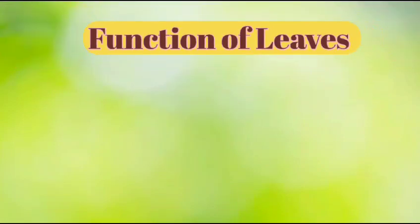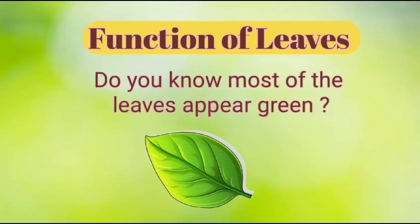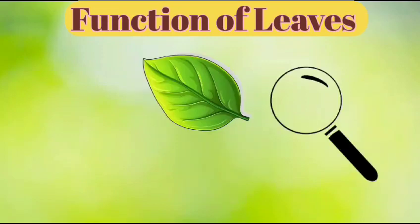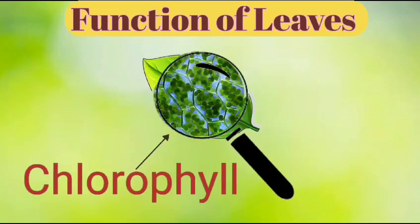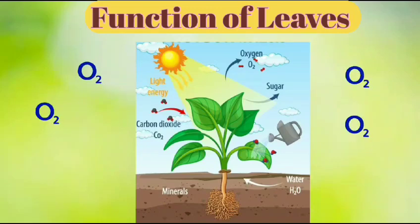Function of Leaves. Leaves make food for the plant. Most leaves appear green because they contain a substance called chlorophyll. Chlorophyll helps leaves to absorb light. Green leaves prepare food for the plant in the presence of air, water and light. Leaves give out a gas called oxygen, which is essential for life.